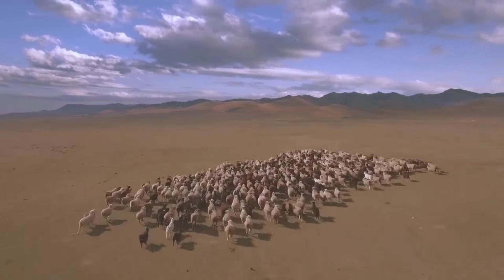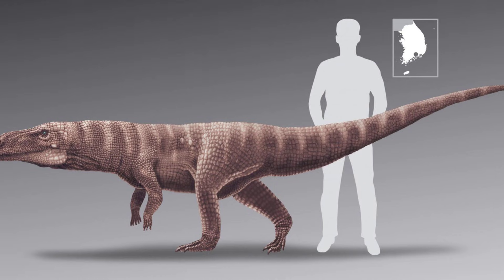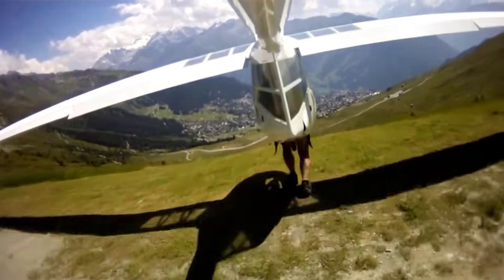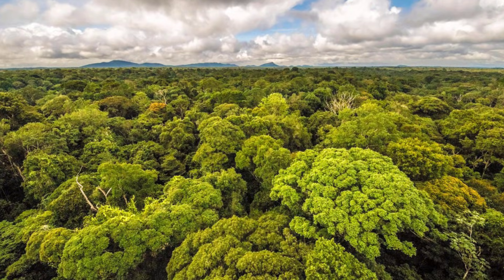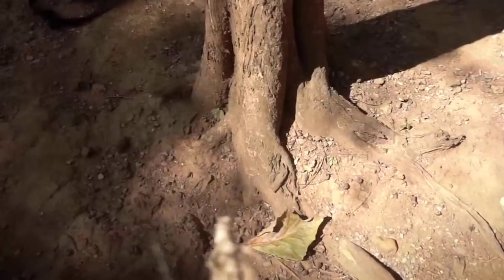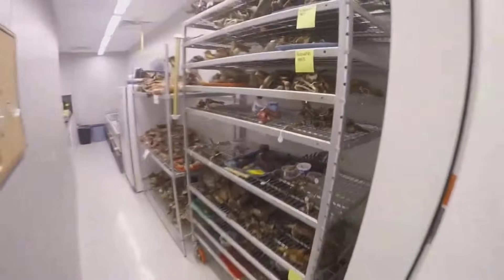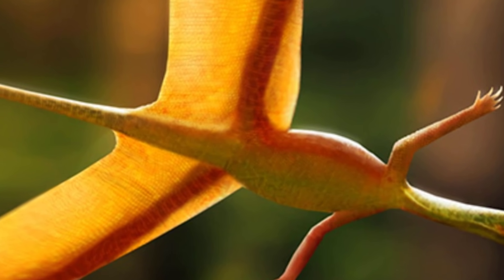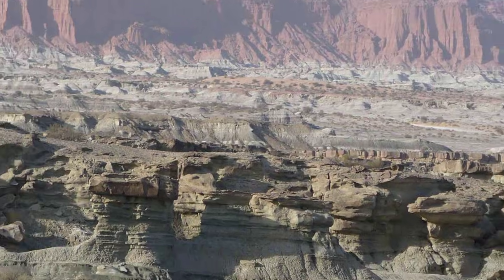But let's zoom out for a second and talk about why evolution even tried this in the first place. In the Middle Triassic, predators were everywhere. On the ground, Rauisuchians. In the water, early crocodilians. In the trees, nothing was safe. Gliding was an escape strategy: jump off the tree before the predator reaches you, glide to safety, survive another day. Every gliding reptile in the Triassic was solving the same problem: how do you escape when you cannot fly? The answer is controlled falling. But there is a catch. Gliding only works if you can get back up into the trees afterward. Otherwise, you are just delaying the inevitable. And that is where Sharovipteryx's design collapsed. It could glide, but it could not climb back up. Every escape was also a trap. It is like designing a parachute that works perfectly, but then prevents you from ever getting back on the plane. Great for one emergency, useless for survival long term.